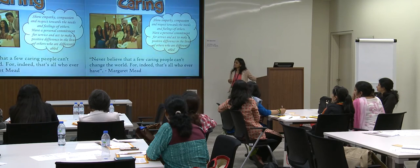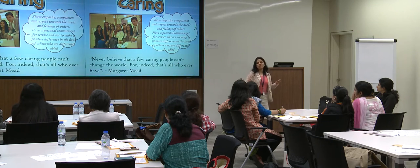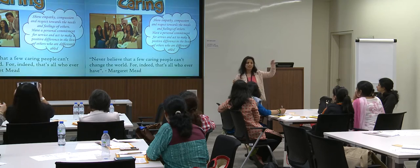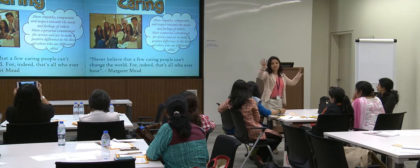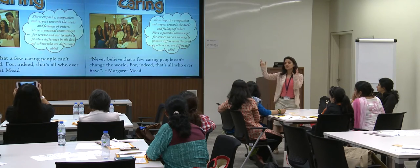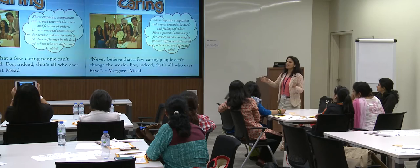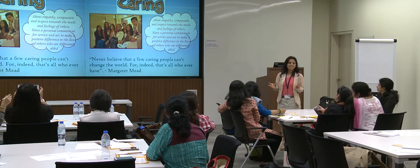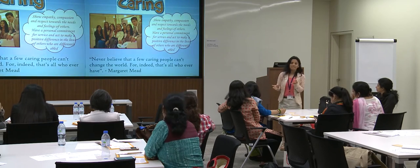Connecting to our IB Learner Profile — the most important attribute from the profile is caring. Students learn to be empathetic, show compassion and respect for the feelings of others, and make a positive difference in other people's lives. As we saw with the T puzzle, we want to have a meaningful, wholesome way of looking at things.